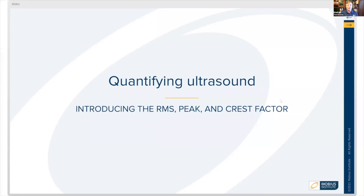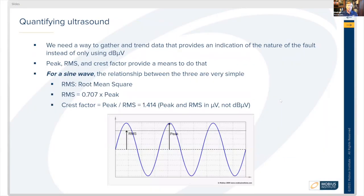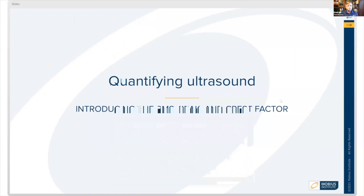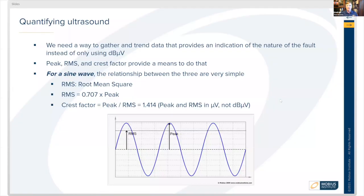Now let's talk about what root mean square, peak, and crest factor are. When quantifying these sounds, we need a way to gather and trend data so that it provides an indication of the nature of the faults, instead of just using the decibel microvolt value. Peak, RMS, and crest factor provide a way to describe the signals we're seeing.